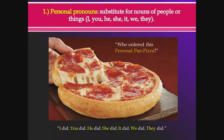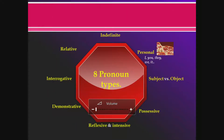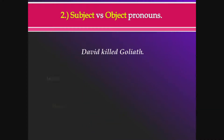Personal pronouns are the most common and familiar ones — the usual substitutes for nouns referring to people or things. For example: I, you, he, she, it, we, they. If somebody asked 'who ordered this personal pan pizza?' somebody might say: I did, you did, he did, she did, we did, or they did. These are all personal pronouns replacing a specific individual or individuals.